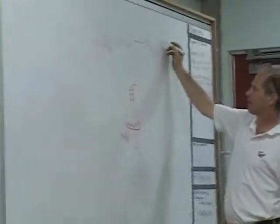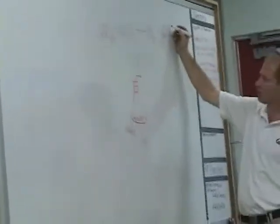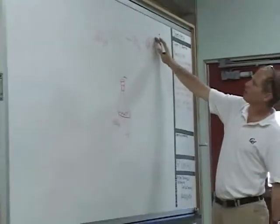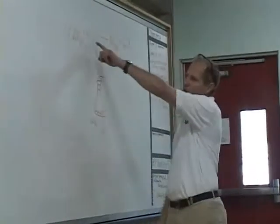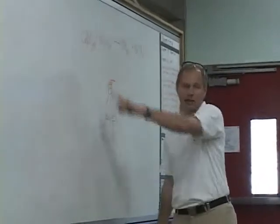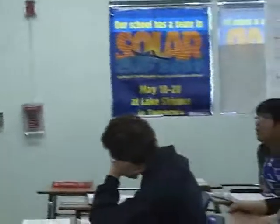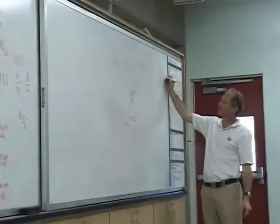Ca. You got Ca plus 2. Cl — what charge is Cl? So what would be an appropriate formula? And what other substance could form when you have a stray hydrogen and a stray hydroxide? Water, aqueous.